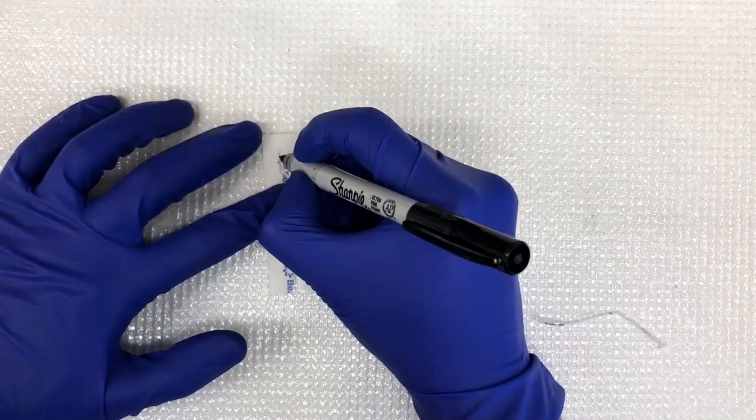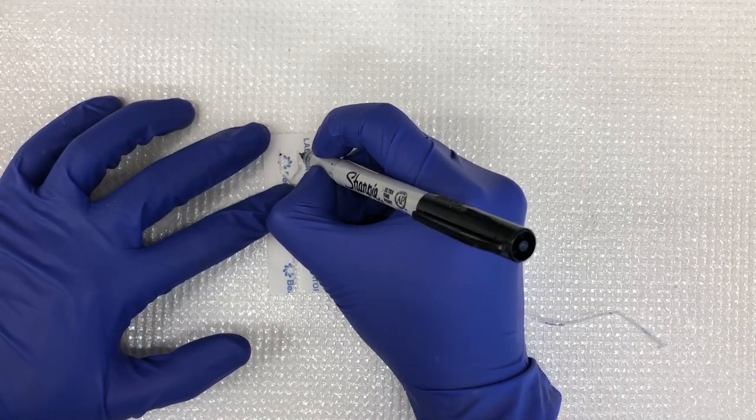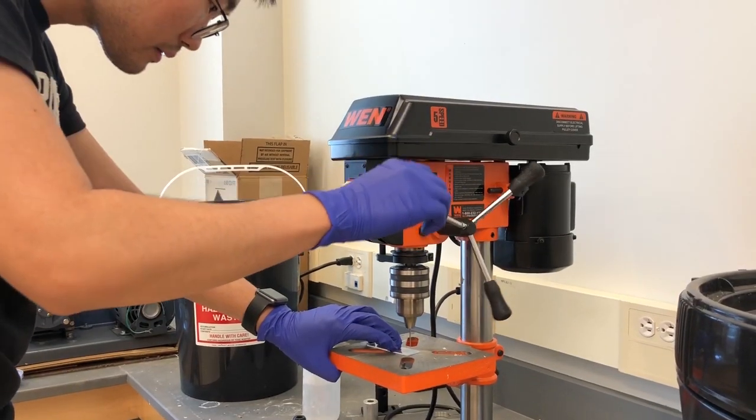When we align the membrane with the plate, we mark the positions of the inlets. Next, two holes are drilled using a drill press.